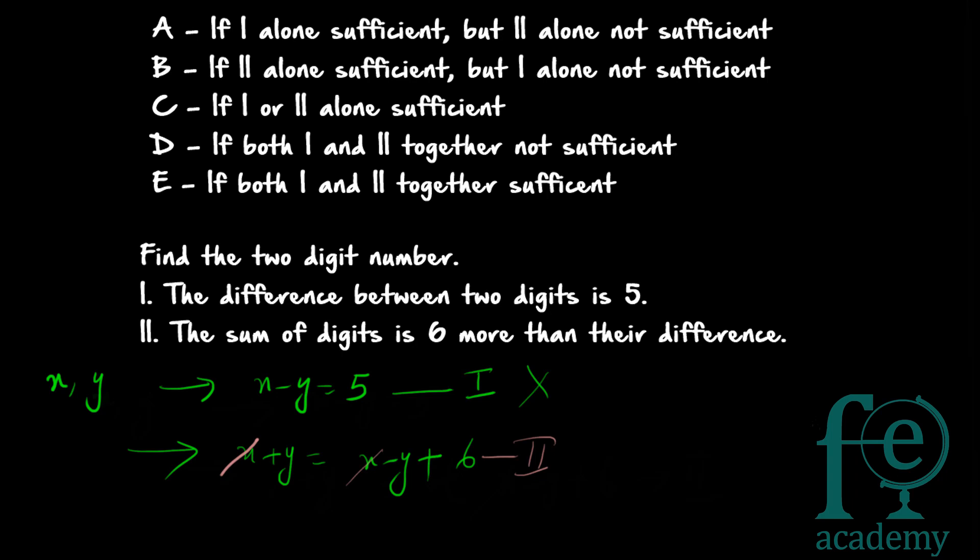Now let us see whether both statements one and two together are sufficient. From statement two, simplifying x plus y equals x minus y plus 6 gives x plus y equals 5 plus 6, so x plus y equals 11. Combined with statement one, x minus y equals 5, we now have two equations and two unknowns, so we can solve for both x and y.